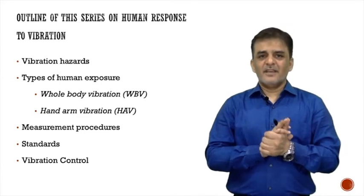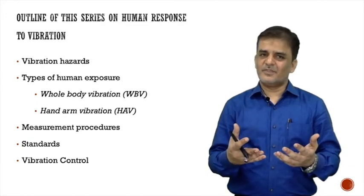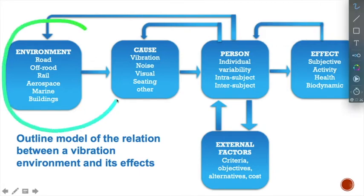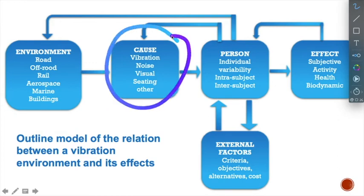The structure of the relationship between vibration and its environment is as follows: the environment can be road, rail, aerospace, marine, or buildings including high-rise structures. Causes of vibration may include noise — for example, sonic booms near airports or space stations can cause vibration intense enough to break glass windows. Visual response while sitting or driving is also part of this framework.